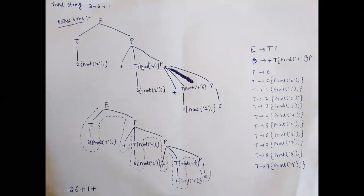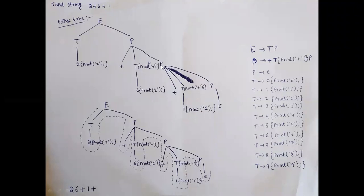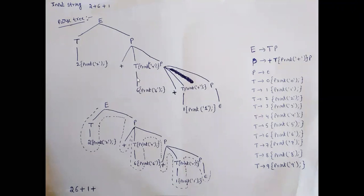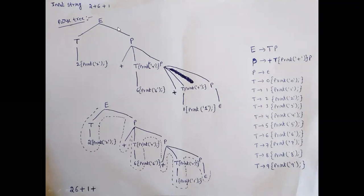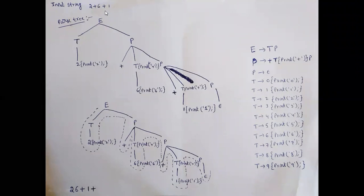Under P produces plus T { print('+'); } P, the symbols on the right-hand side are plus, T, print('+'), and P. The next value in the input string two plus six plus one is 6, so T produces 6 with semantic action { print('6'); }. Then P again appears. We still have plus one remaining in the input, so P does not produce epsilon yet.